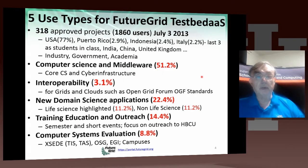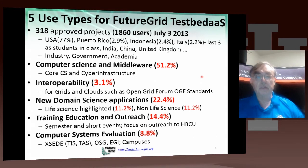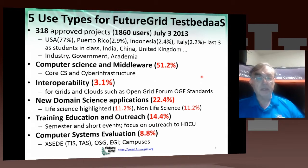The typical usage of FutureGrid is illustrated here. We've had 318 approved projects by July 3rd, and 1,860 users. Those users are dominant in the USA, but especially when we've had classes, we have significant users from other countries. Of those projects, 51% are from computer science or middleware, 3% interoperability, and 22% in domain science — half of those in life science, half in non-life science areas.